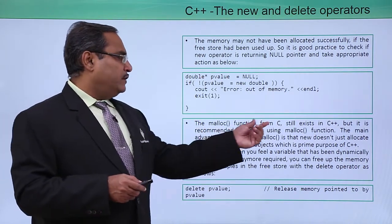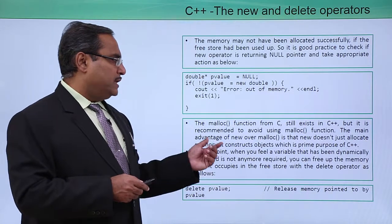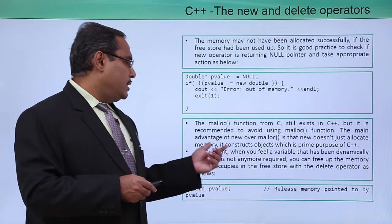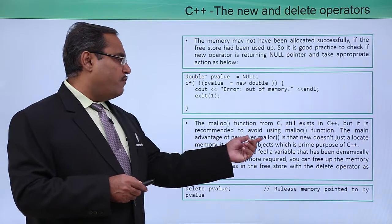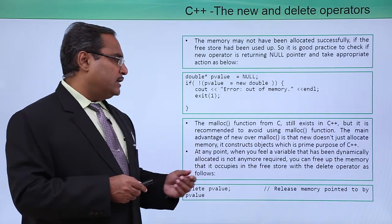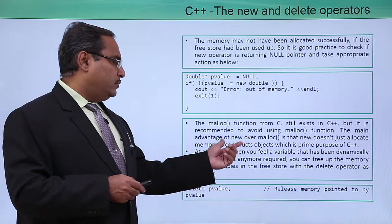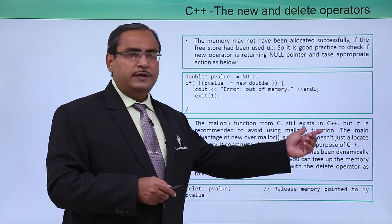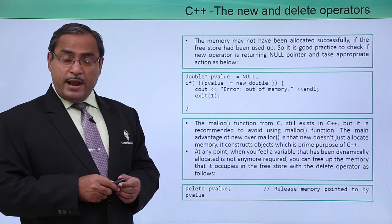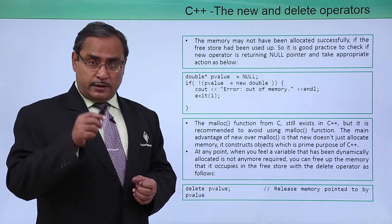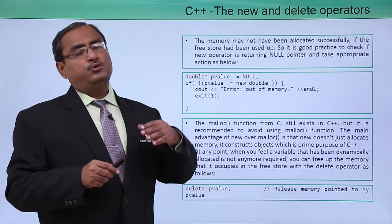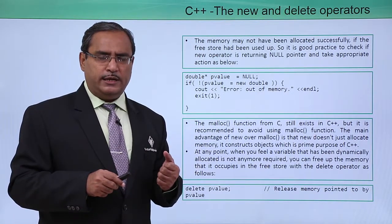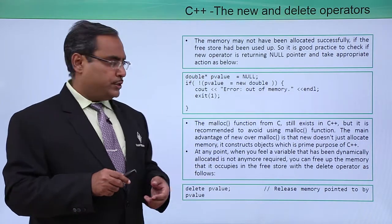The malloc function from C still exists in C++, but it is recommended to avoid using malloc. The main advantage of new over malloc is that new does not merely allocate memory — it constructs objects, which is the prime purpose of C++. So while malloc can also be used in C++ code, we should prefer the new operator.